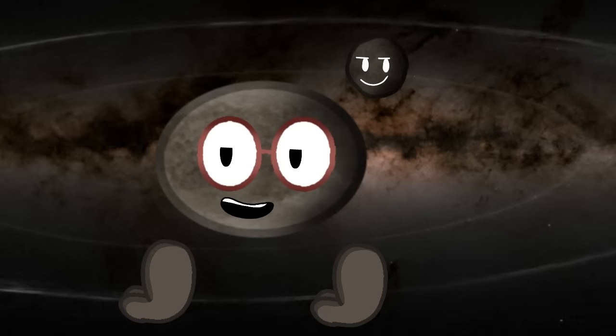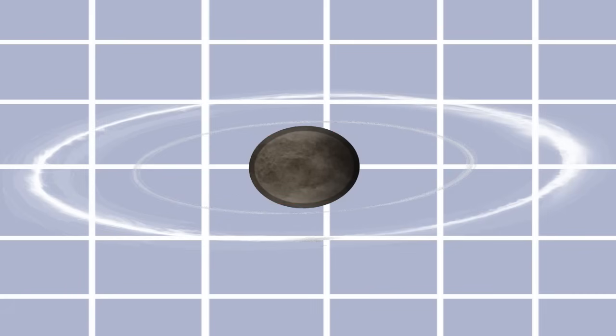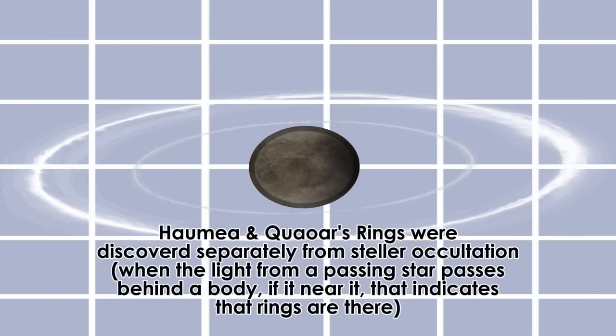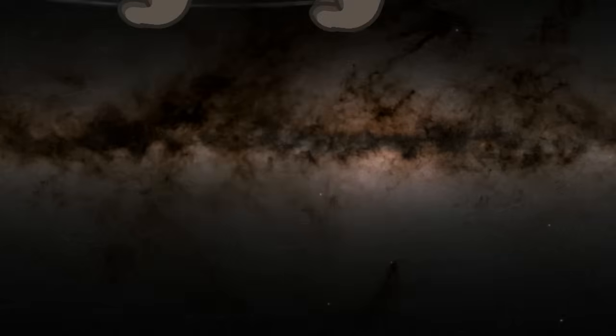I have two rings outside of my Roche limit. An area around any celestial body where any object can be torn apart and turned into rings. Like the ones around Saturn. But mine aren't in this limit, which makes this an anomaly. Along with Haumea's rings, mine were found in a stellar occultation. I'm also known as a cubewano, which means I'm not affected by Neptune's gravity. Anyways, that's all I have to say. So, bye.